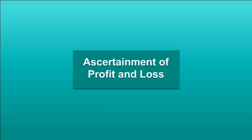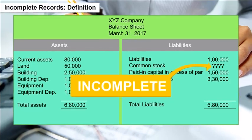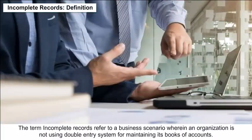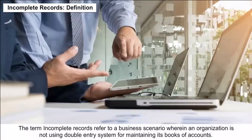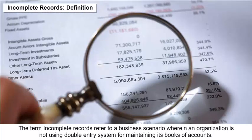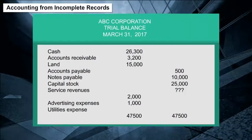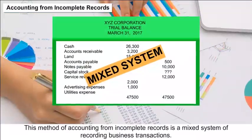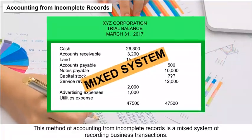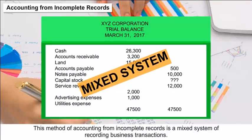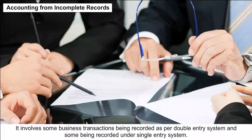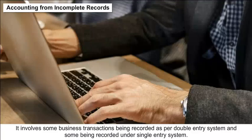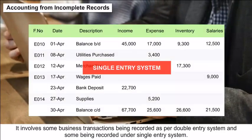Ascertainment of profit and loss: The term incomplete records refers to a business scenario wherein an organization is not using the double entry system for maintaining its books of accounts. Accounting from incomplete records is a mixed system of recording business transactions, involving some transactions recorded as per double entry system and some under single entry system.